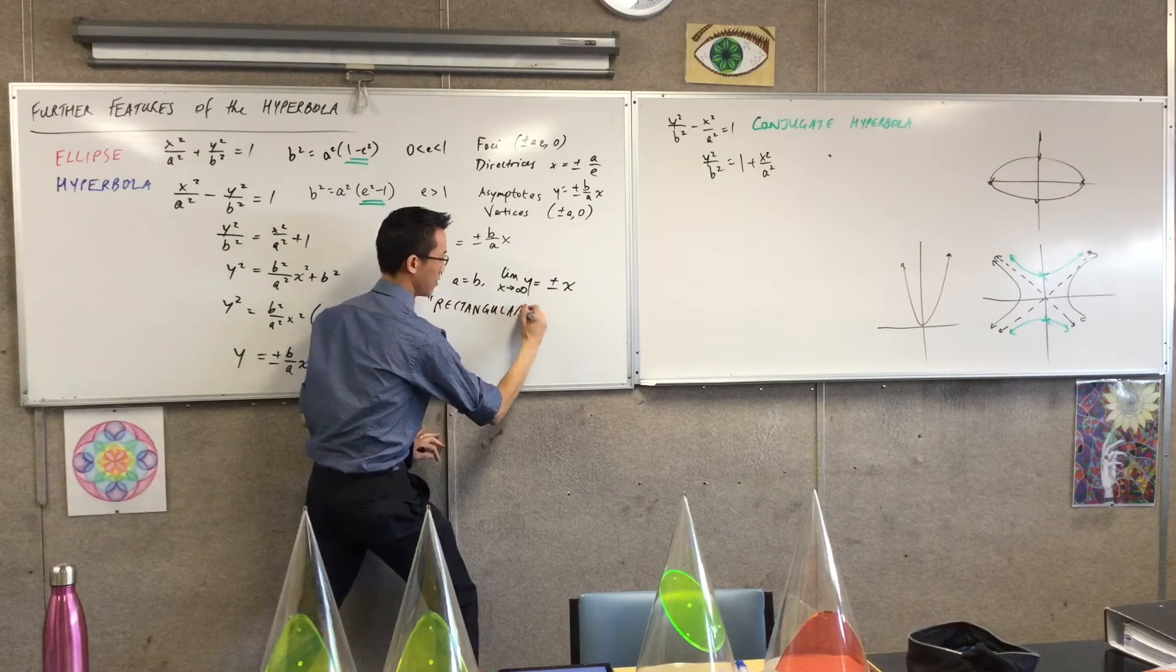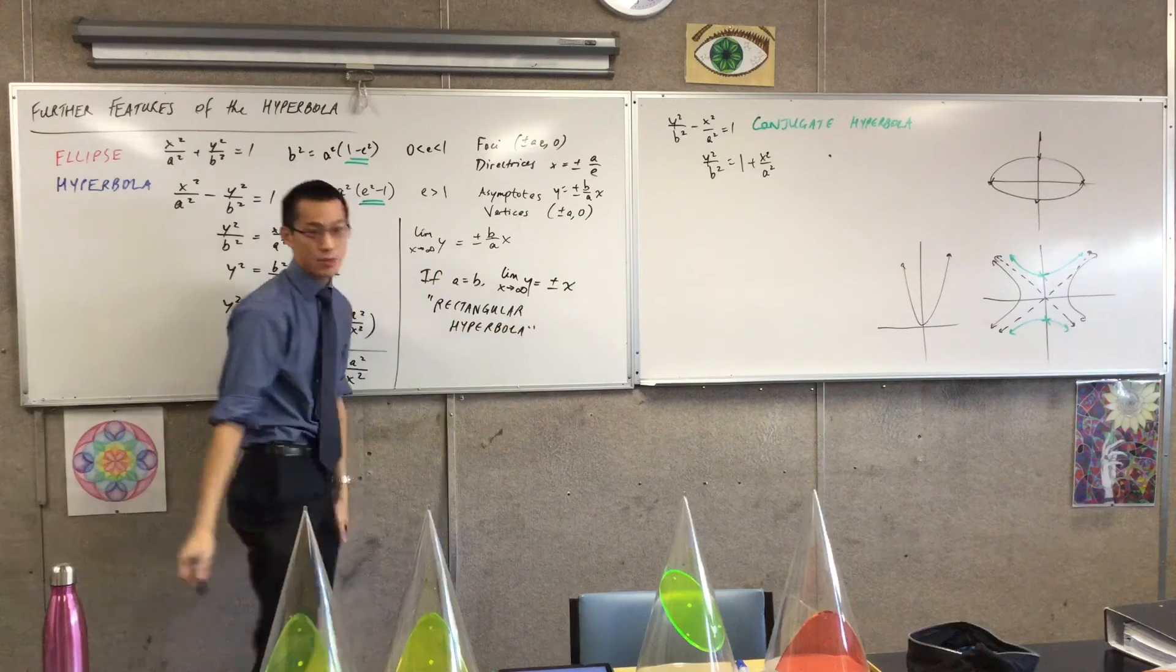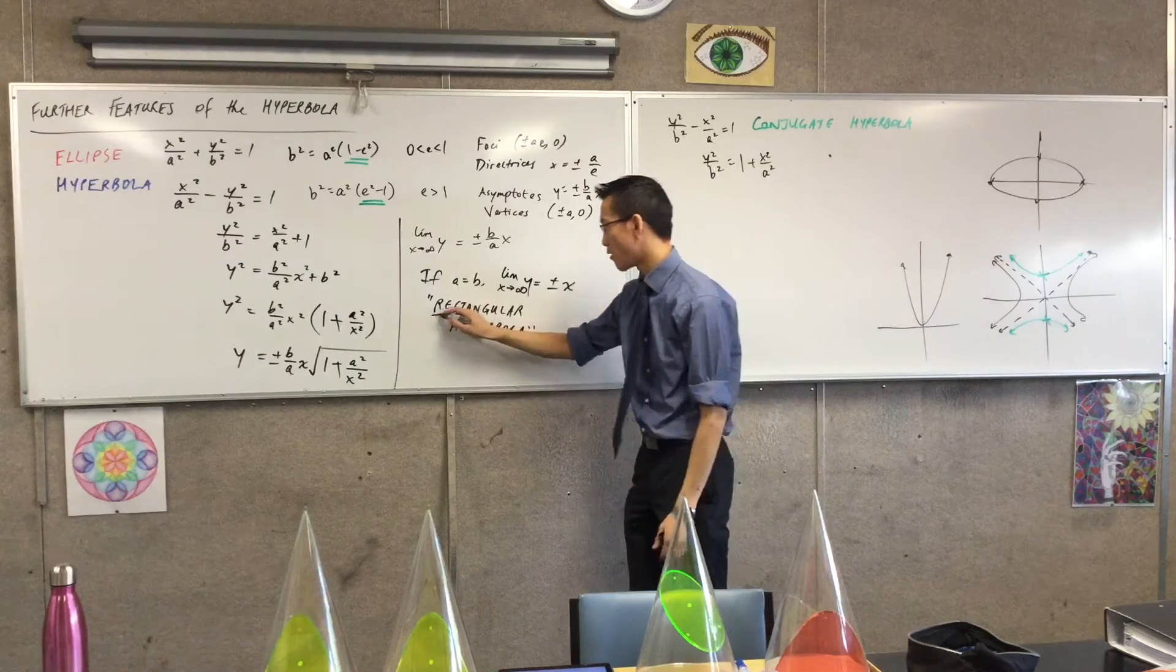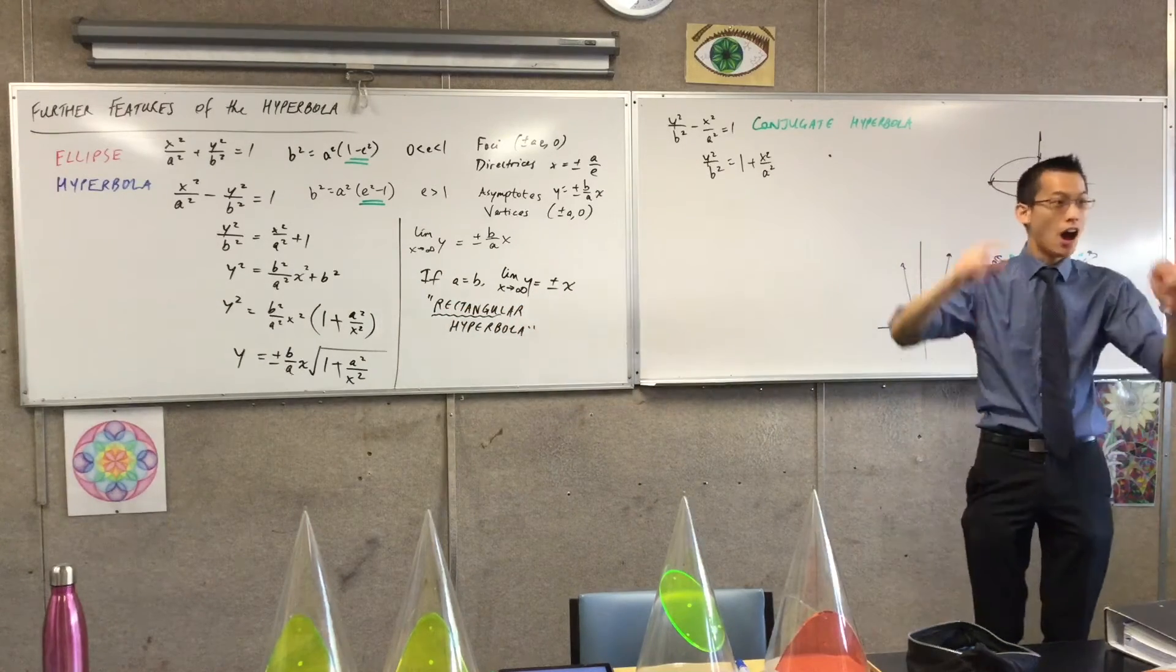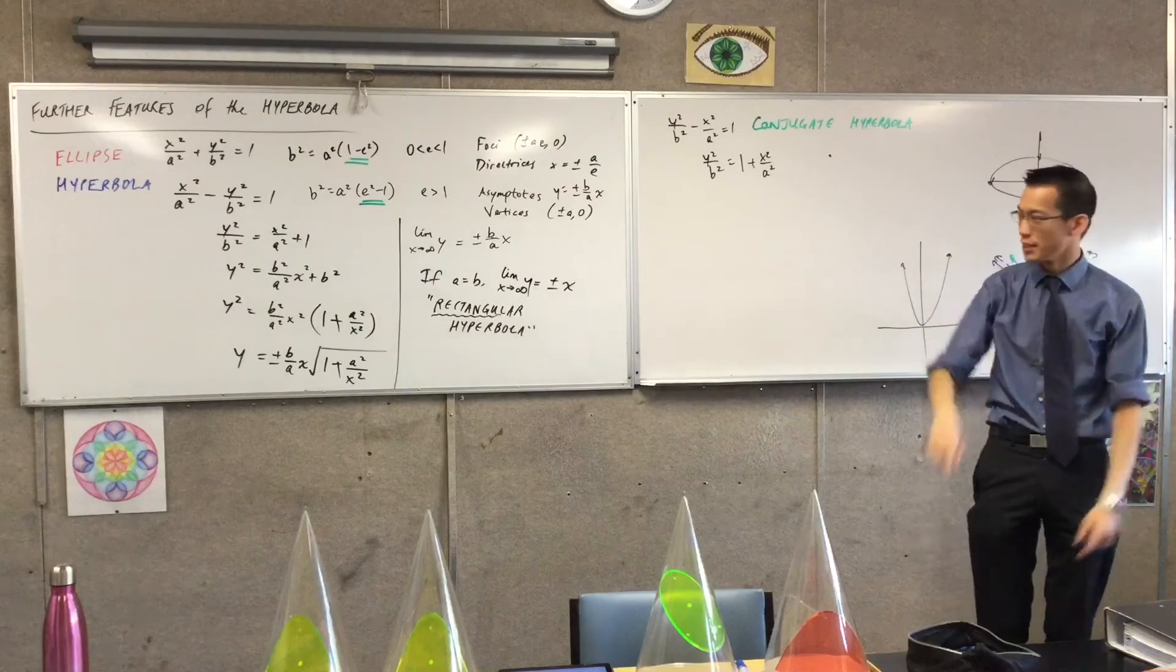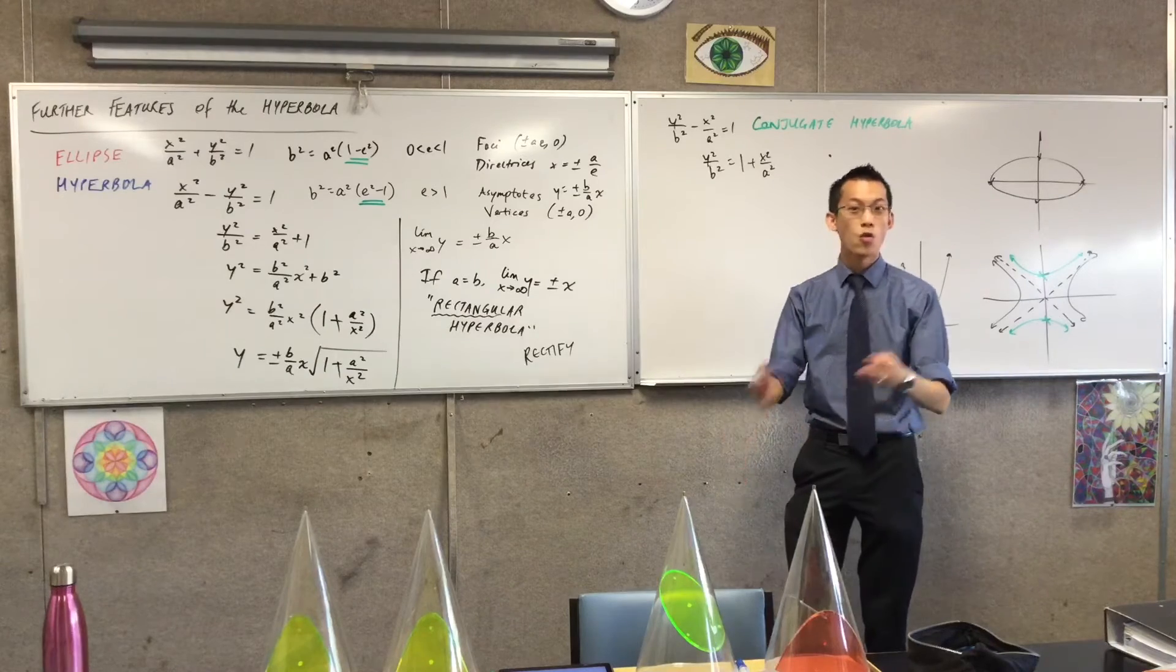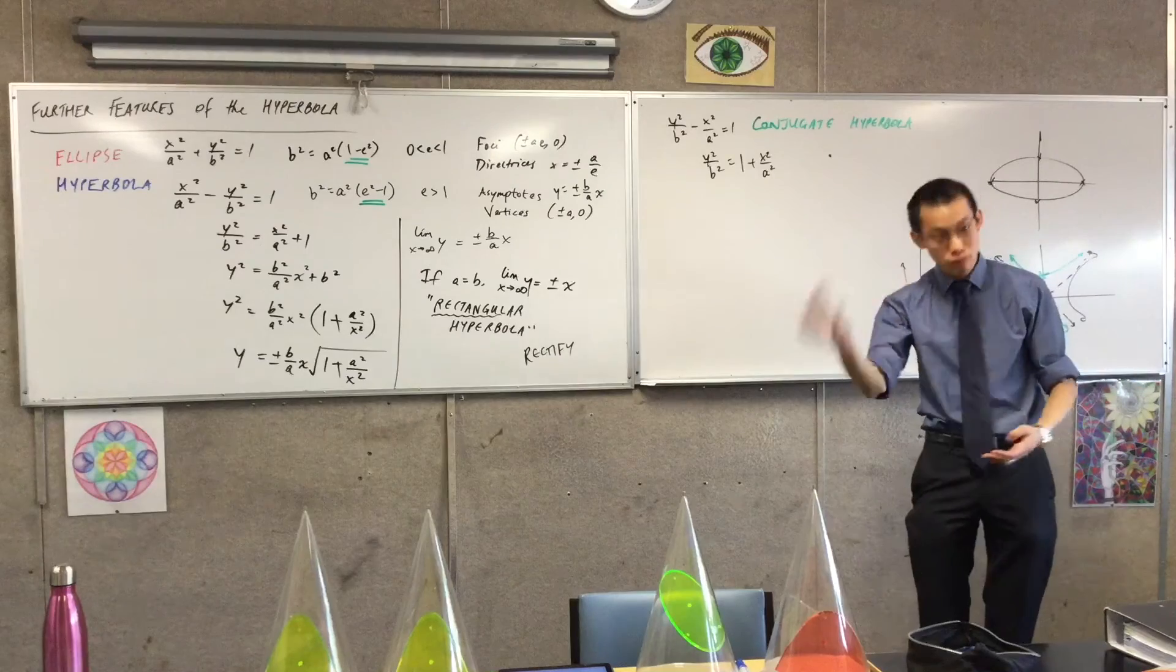And the answer is, remember what I just told you about the asymptotes? They're at right angles. In fact, that's exactly what rectangle means. We're so familiar with rectangles being a shape that has four right angles in it. But actually, rectangle just means right angle. So for example, when you rectify something, it's like something's wrong, and you rectify it. You make it right.